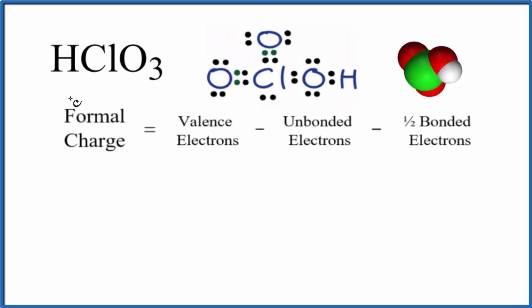In this video, we'll calculate the formal charge for each element in HClO3, which is called chloric acid. So first off, we have this Lewis structure here. Formal charges tell us if this is a really good Lewis structure, if it's a favorable or likely Lewis structure.